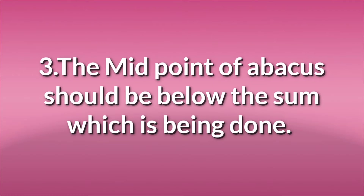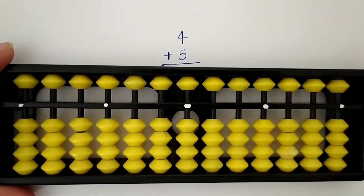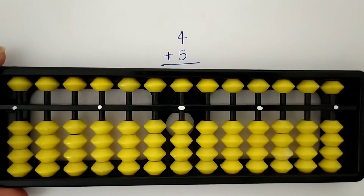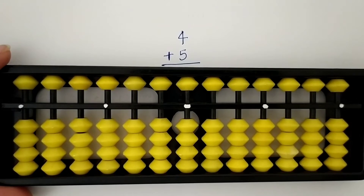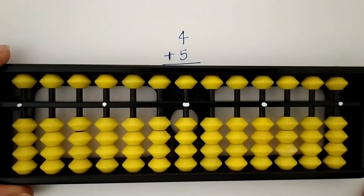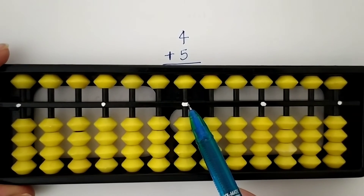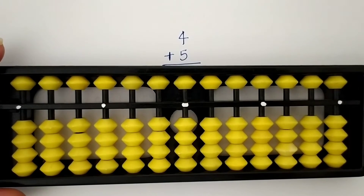The third course instruction is that the midpoint of the abacus should be placed below the sum which is being done. See in the next video. In this video, you will see we do 4 plus 5 and place the abacus below the sum — the house point is here. You have to do it like that.